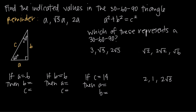A 60-degree angle measure and a 30-degree angle measure. So this is an example of a 30-60-90 triangle because we have 30 degrees, 60 degrees, and 90 degrees as the three interior angle measures.